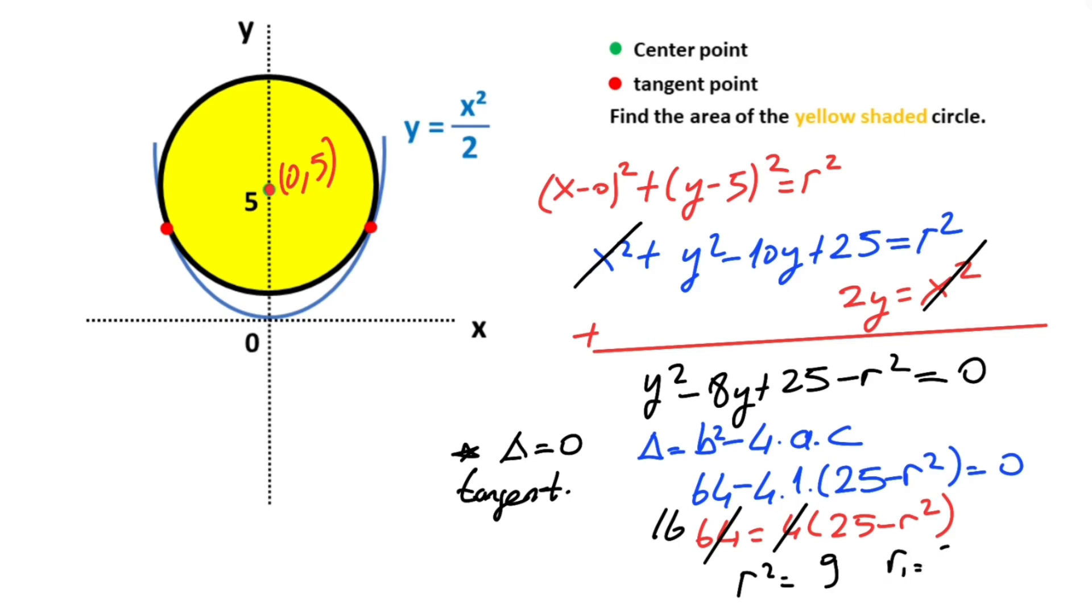That means the first root equals 3 and the second root is -3. We know that length can't be negative, so the second root is canceled.